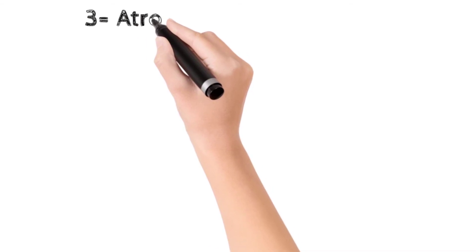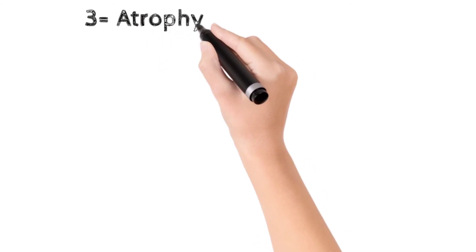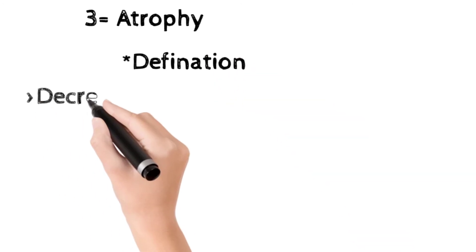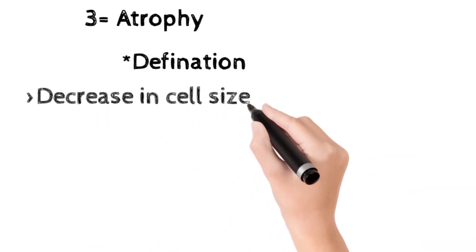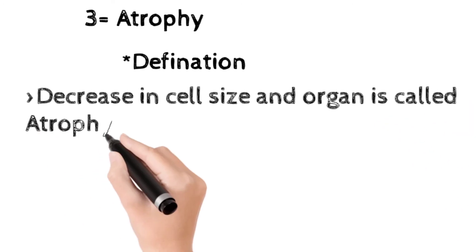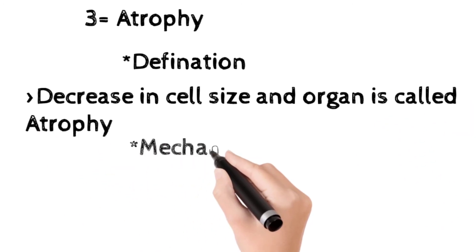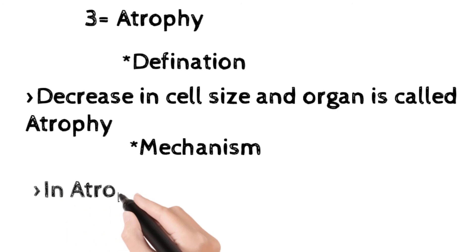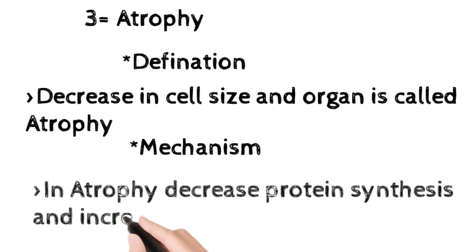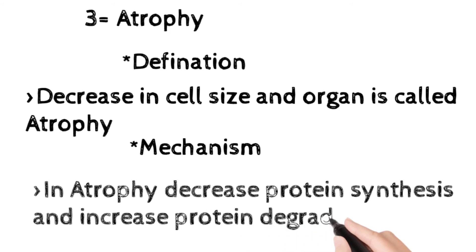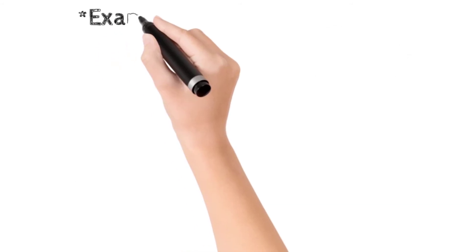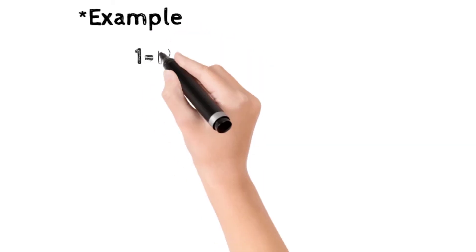Now the third adaptation is atrophy. The definition: a decrease in cell size and organ size is called atrophy. Atrophy is the reverse of hypertrophy. The mechanism is also the reverse: in atrophy there is decreased protein synthesis and increased protein degradation in cells.